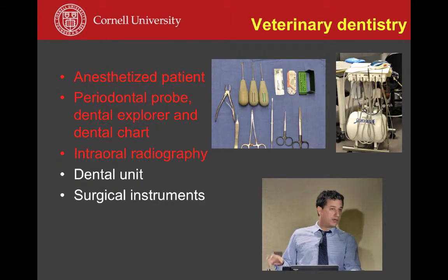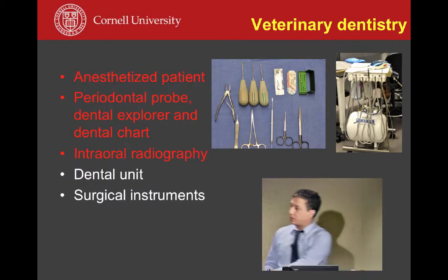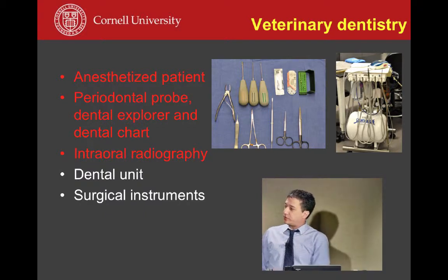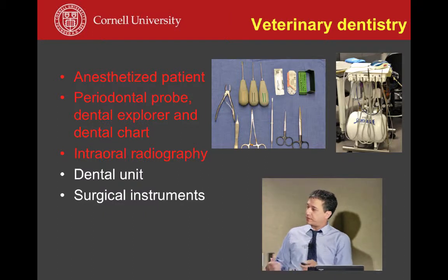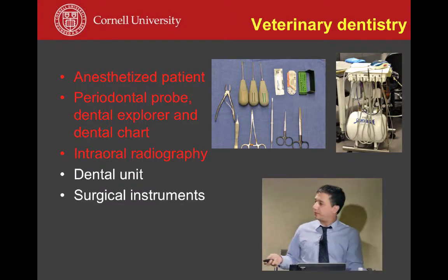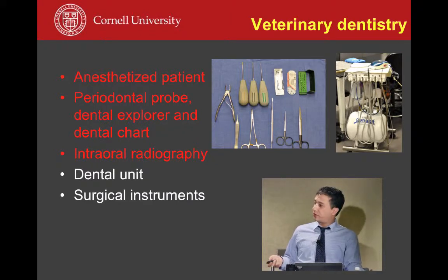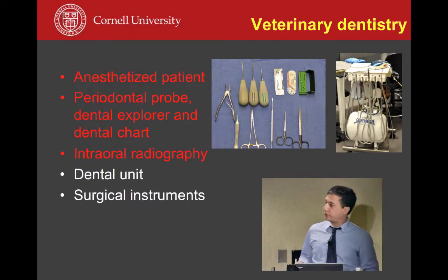We're also going to need a dental unit, which is fundamental to execute the treatment plan. After coming up with a diagnosis, we will need a dental unit — typically an air-driven unit, although electrically powered units also exist. We'll need a few basic instruments including scissors, scalpel handle, needle holders, luxators or elevators for extracting teeth, and forceps to deliver the tooth.